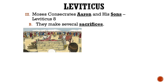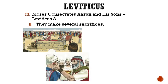Then a ram was brought to be sacrificed, and its blood was sprinkled upon the altar and all around it. This sacrifice was burnt on the altar. Then another ram, called the Ram of Consecration, was brought and killed. The blood from this ram was put on Aaron's right ear, right thumb, and right big toe, as was also done to Aaron's sons.